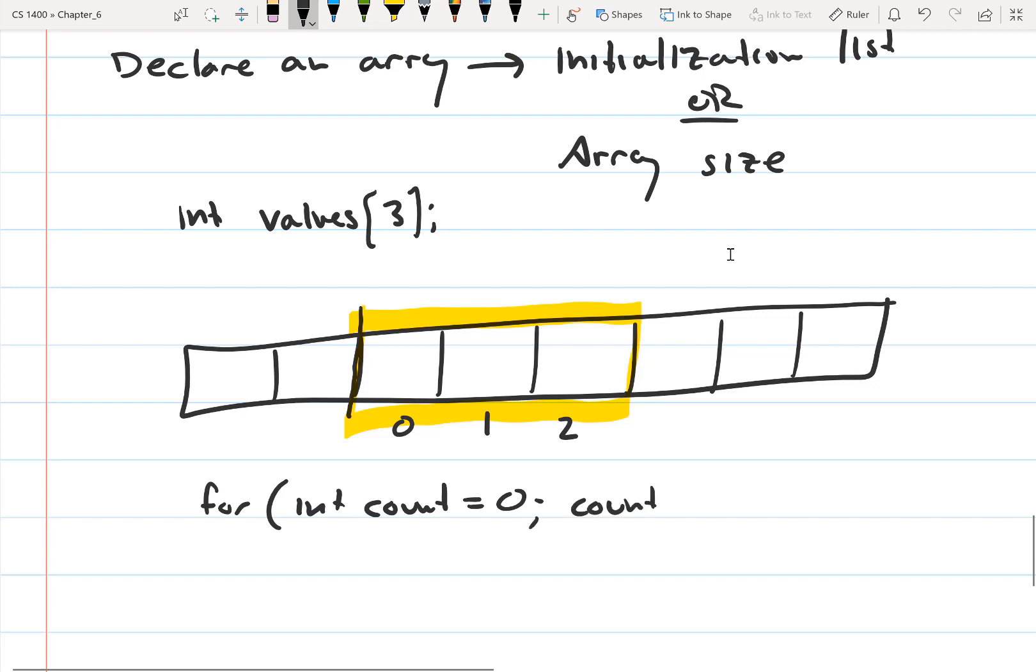So count, let's say we accidentally do less than or equal to 3, which seems kind of reasonable when you're writing this. And then count++. And then we have values[count] equals 100.